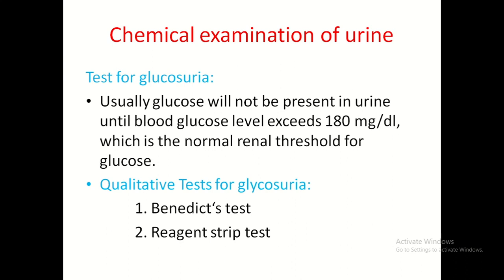After proteins, coming to chemical tests to detect sugar or glucose in urine — test for glycosuria. Normally glucose will not be present in urine until blood glucose level exceeds 180 mg/dL. This 180 mg/dL is called the renal threshold for glucose. If blood glucose is greater than 180 mg/dL, it appears in urine; otherwise it does not.